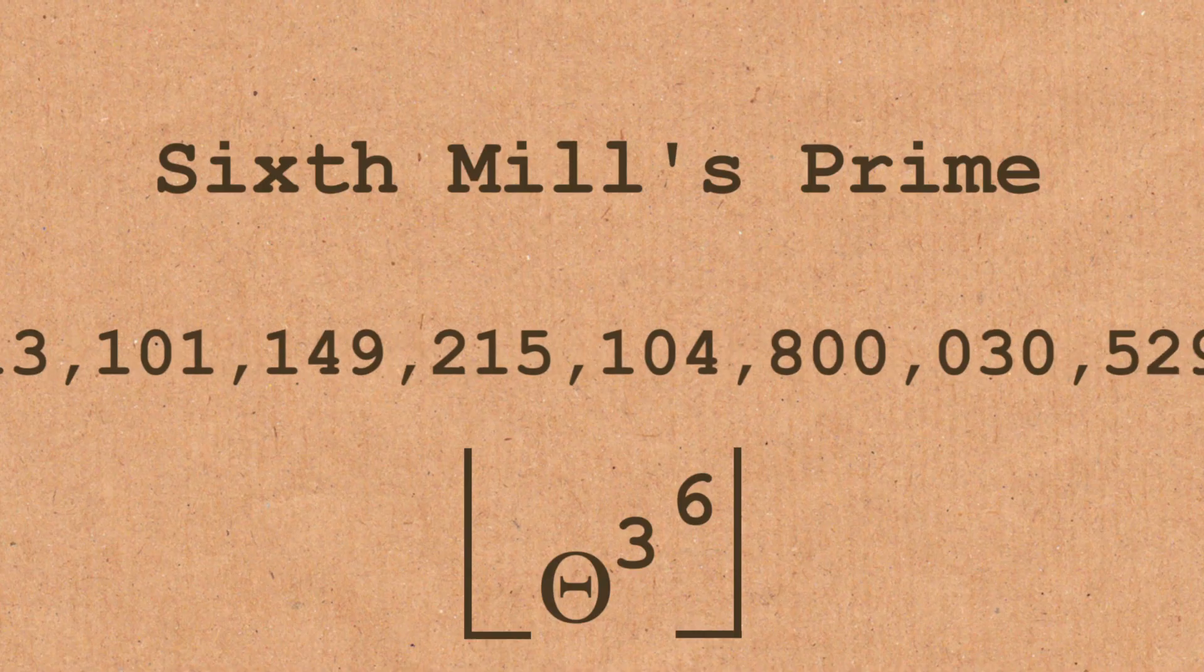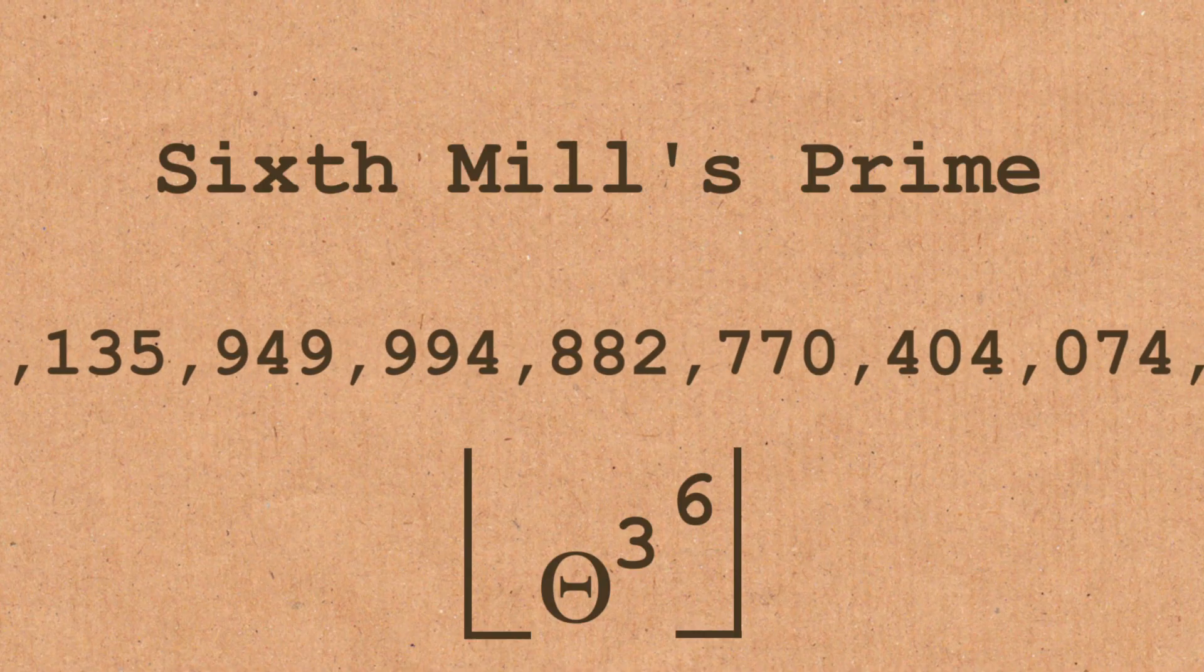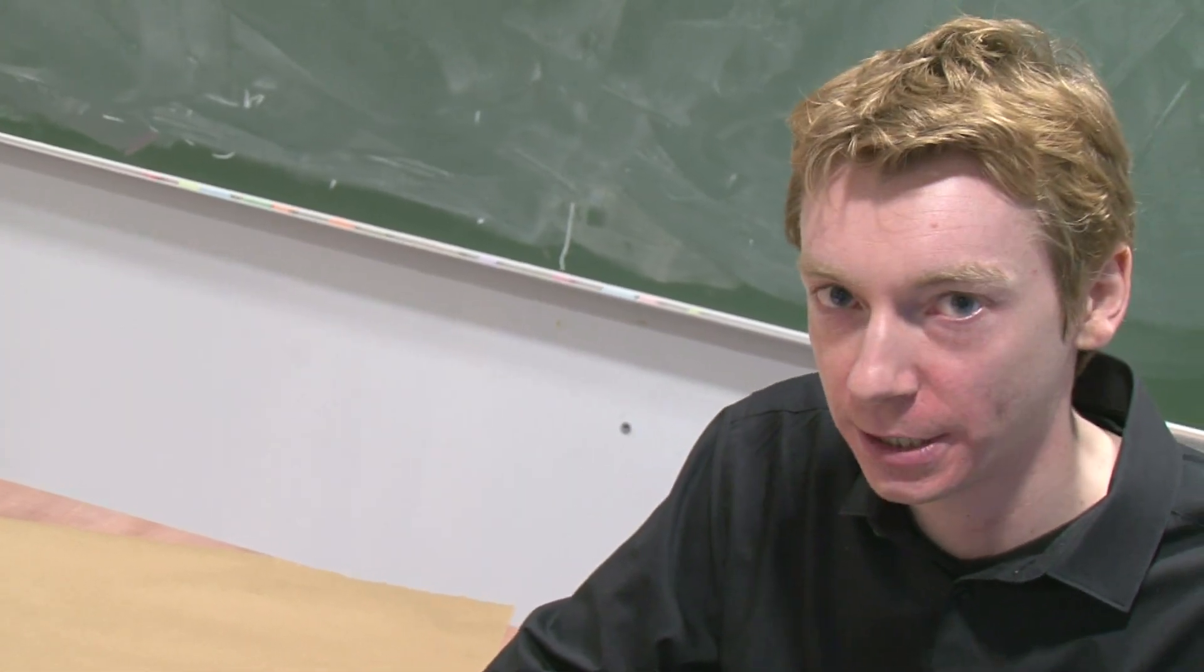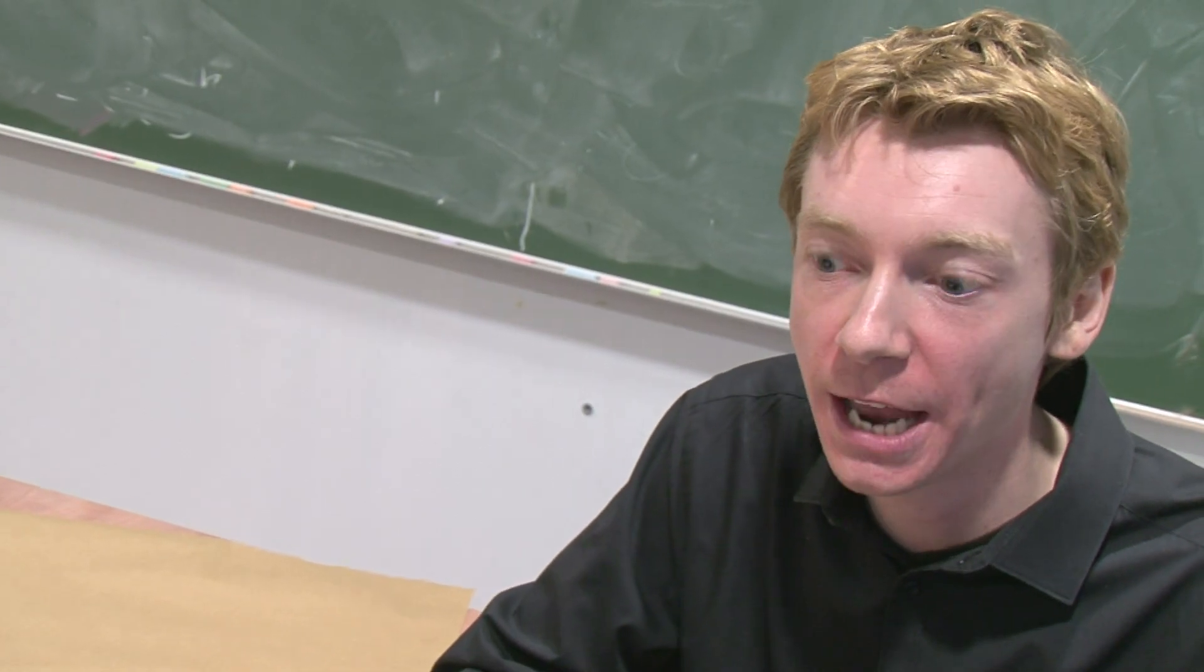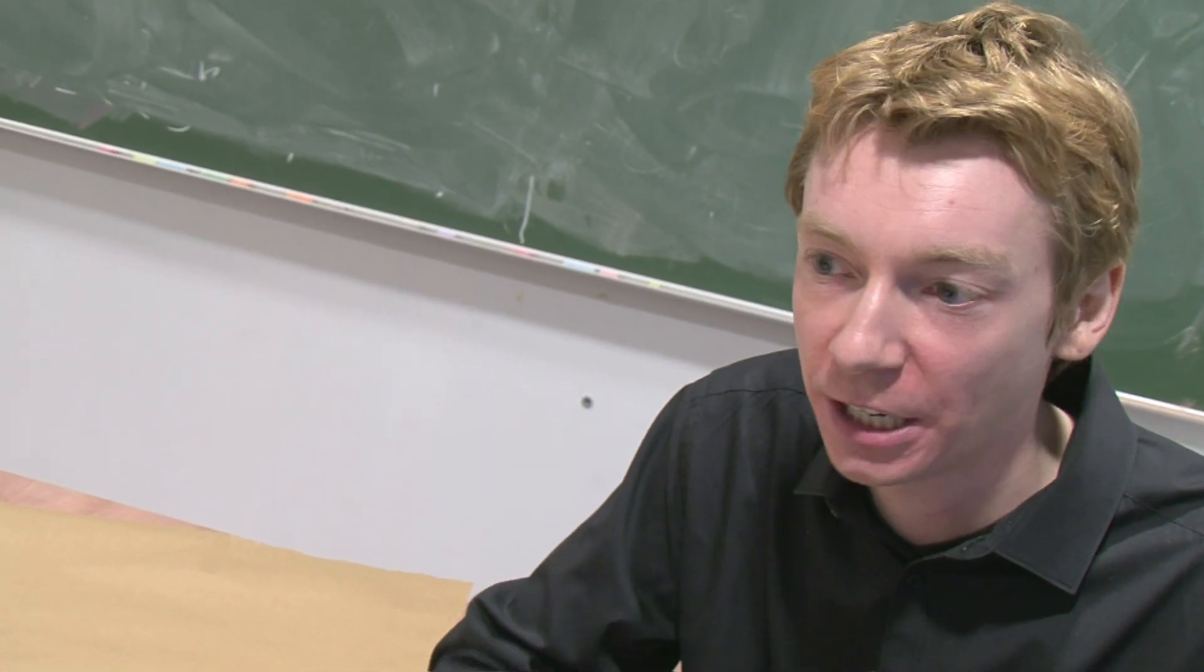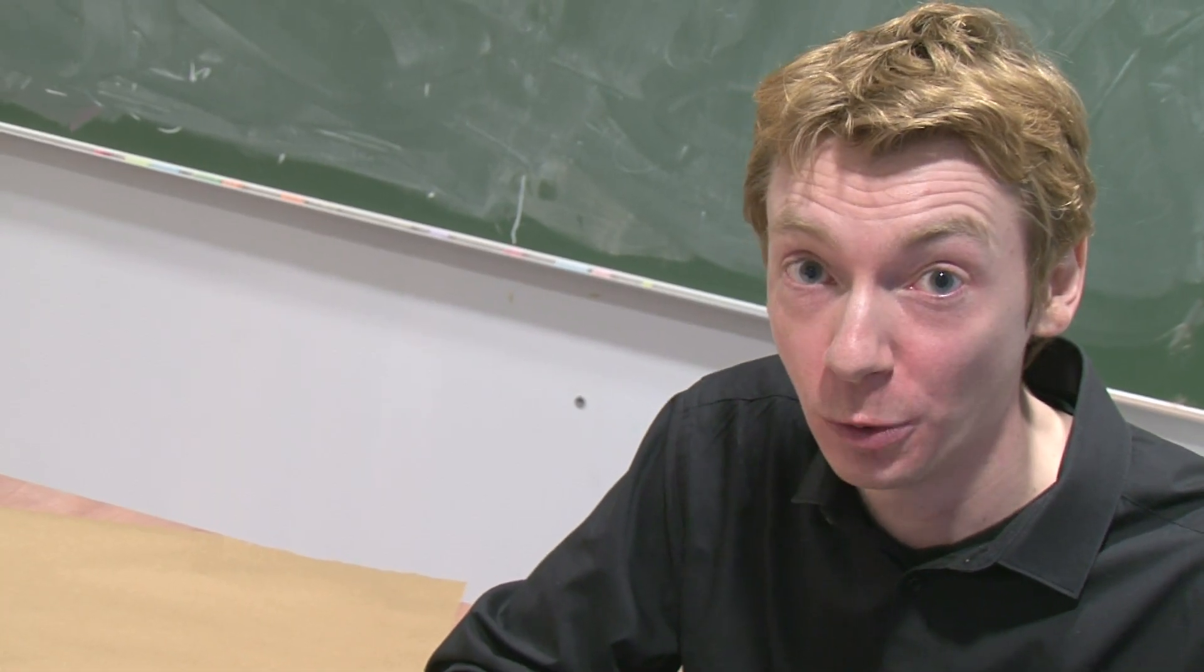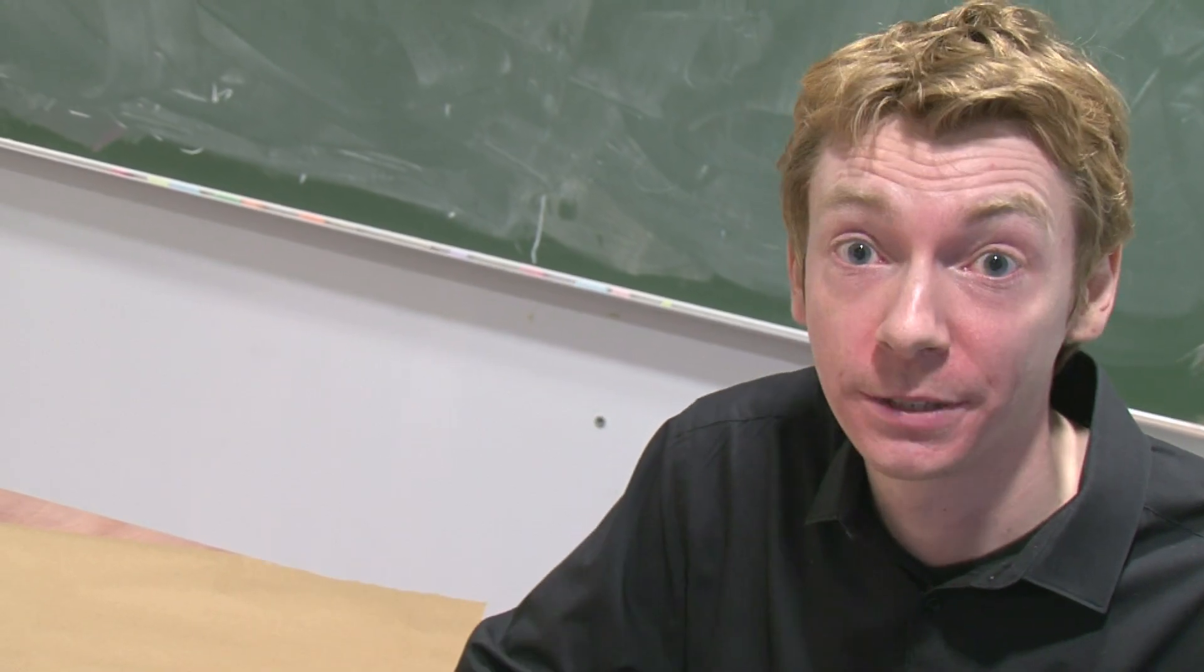One of the things that we might be able to do is, if Riemann's hypothesis is true. Riemann's hypothesis is a very important hypothesis in mathematics that hasn't been proven yet. That is a millennium prize, and it's related to primes and how they're distributed. If that is true, it probably is true. If it's true, then we have another way to find mill primes.